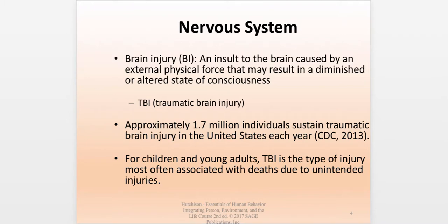Starting with the nervous system — one of the disorders you're going to run into from time to time is brain injuries. We typically think of traumatic brain injuries, where someone has been in a motorcycle accident and hit their head, and their brain was damaged sufficiently that they continue to have problems over the years. The part where social workers often come into play is the emotional consequences of that brain injury and how they play out in the individual's relationships with the world.